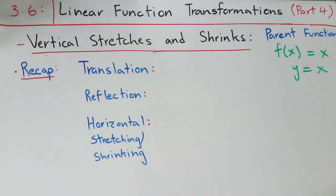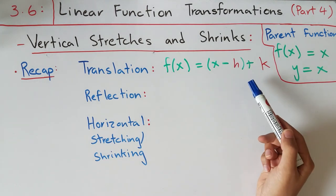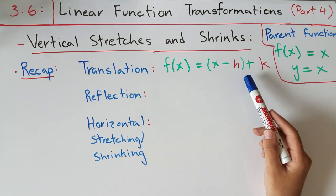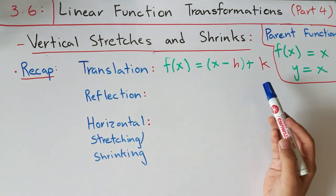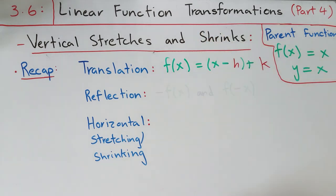Over the last few parts we've also learned about linear function transformations: the translation transformation, the reflection transformation, and horizontal stretching and shrinking. For translations, the general equation is f(x) = (x − h) + k, where h determines how much the function moves right or left, and k tells you how much the function is pushed upwards or downwards.